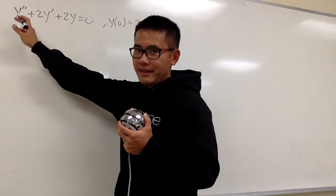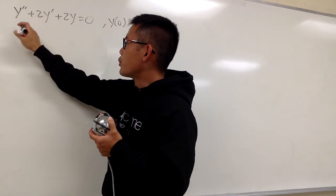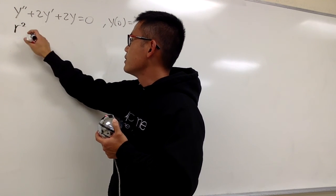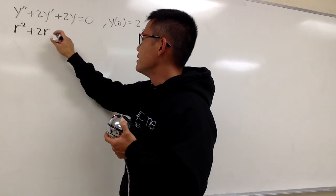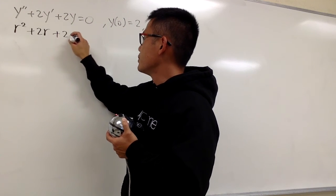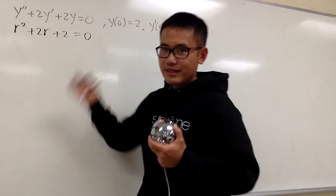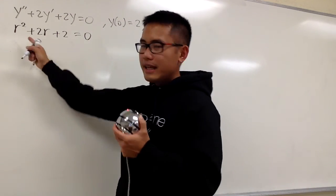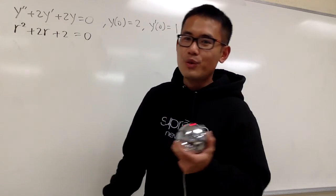Let's go ahead and change this into the characteristic equation. y double prime corresponds to r squared, and this is going to be plus 2r, and this is going to be plus 2, equal to 0. Solve for r. I can't factor it, so we have to use the quadratic formula.